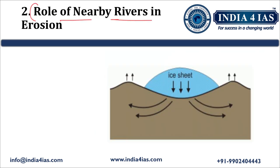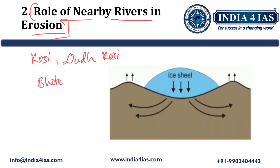Now we will look into the role of nearby rivers in this process. Rivers such as Kosi, Duda Kosi, and Bote Kosi — which are tributaries of the Ganga — drain the Himalayan region around Mount Everest. These rivers play a crucial role in eroding the mountains. As rivers cut through rock, they remove sediments and debris, which lightens the load on the earth's crust. As the river cuts rocks and removes sediments, the earth's crust becomes lighter because of the removal of erosion materials.